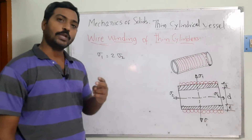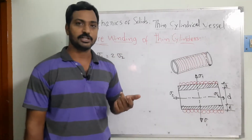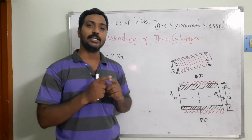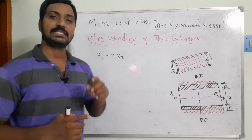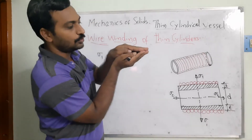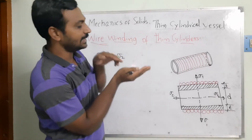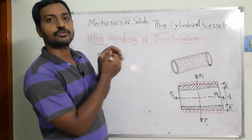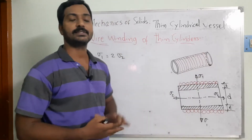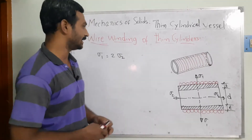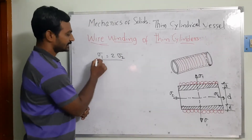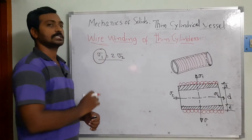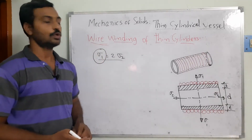From the last video lectures, we have seen there are two types of stresses acting: one is the circumferential stress acting in the circumferential direction, and the second is the longitudinal stress acting in the longitudinal direction. When circumferential stress acts, the material starts to fail in the longitudinal direction; when longitudinal stress acts, failure occurs circumferentially. It is clear that circumferential stress equals two times the longitudinal stress, making it the main cause of failure.